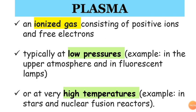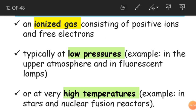This is general knowledge only. An ionized gas consisting of positive ions and free electrons, typically at low pressures. The plasma is used in fluorescent lamps or at very high temperatures, for example in stars and nuclear fusion reactors.